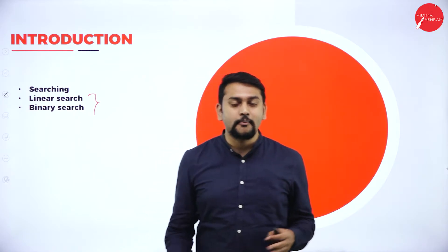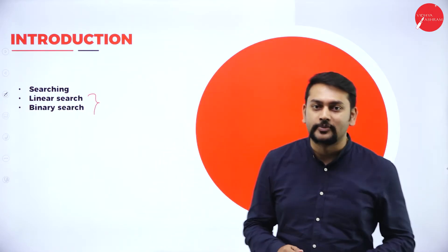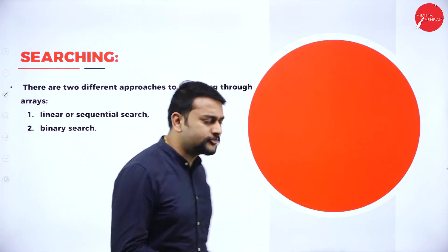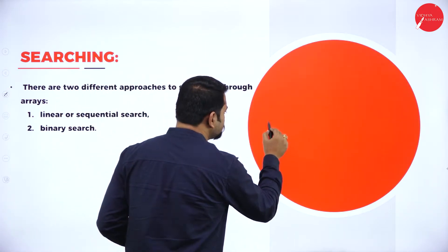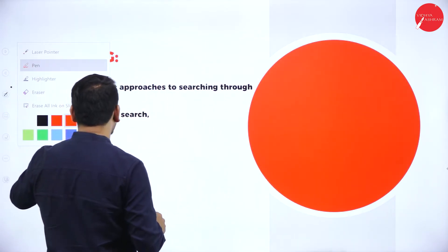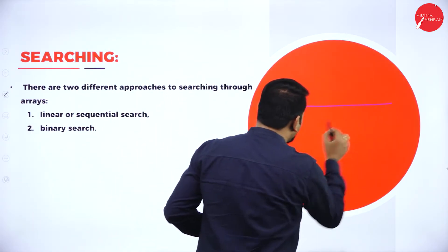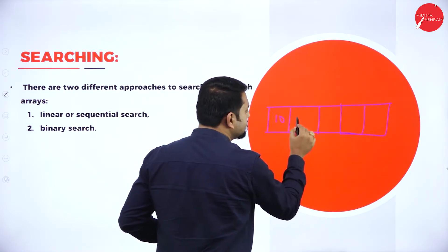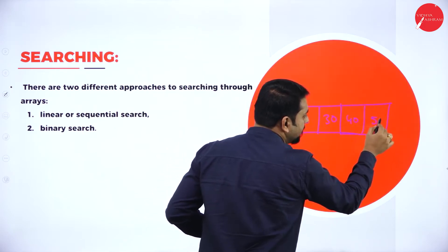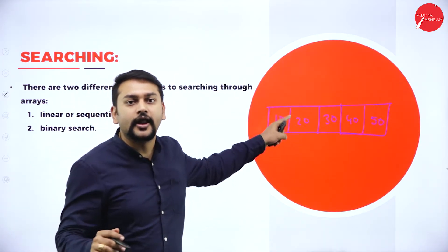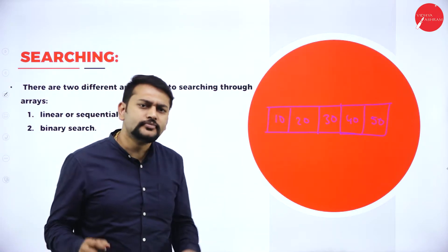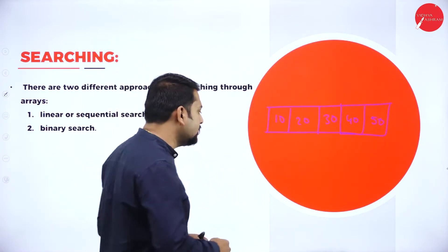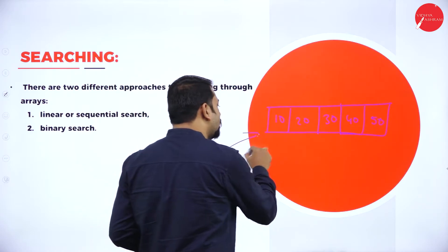So what exactly is searching all about? Say for example, I have stored multiple items. Let's take the example of an array — imagine this is my array. In this array I have stored multiple items like 10, 20, 30, 40, and 50. When I have this, it's very important for all of us to be able to search for a given item.